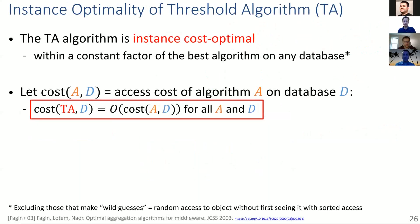What made this algorithm famous is a very interesting and rare guarantee called instance optimality. The key idea is: no other algorithm on any database can give you an asymptotically better bound — except for some degenerate cases. This algorithm is within a constant factor of the best possible algorithm on any database.